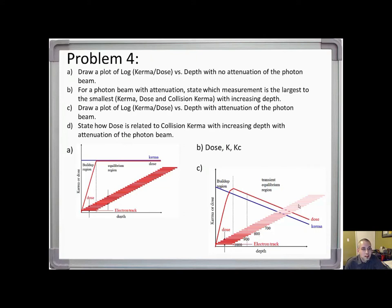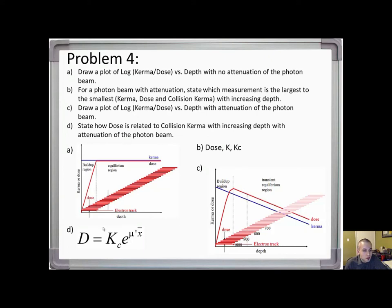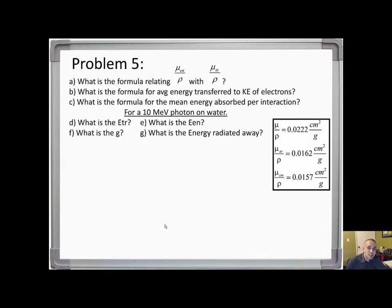For part D, state how dose is related to collision kerma with increasing depth where there is attenuation of the photon beam. When there is attenuation, it's not charge particle equilibrium — it is transient equilibrium, TCPE. The relation is: dose equals collision kerma times e to the exponent of the effective attenuation coefficient times x, where x is the mean distance the secondary charged particles carry their energy in the direction of the primary beam while depositing it as dose.